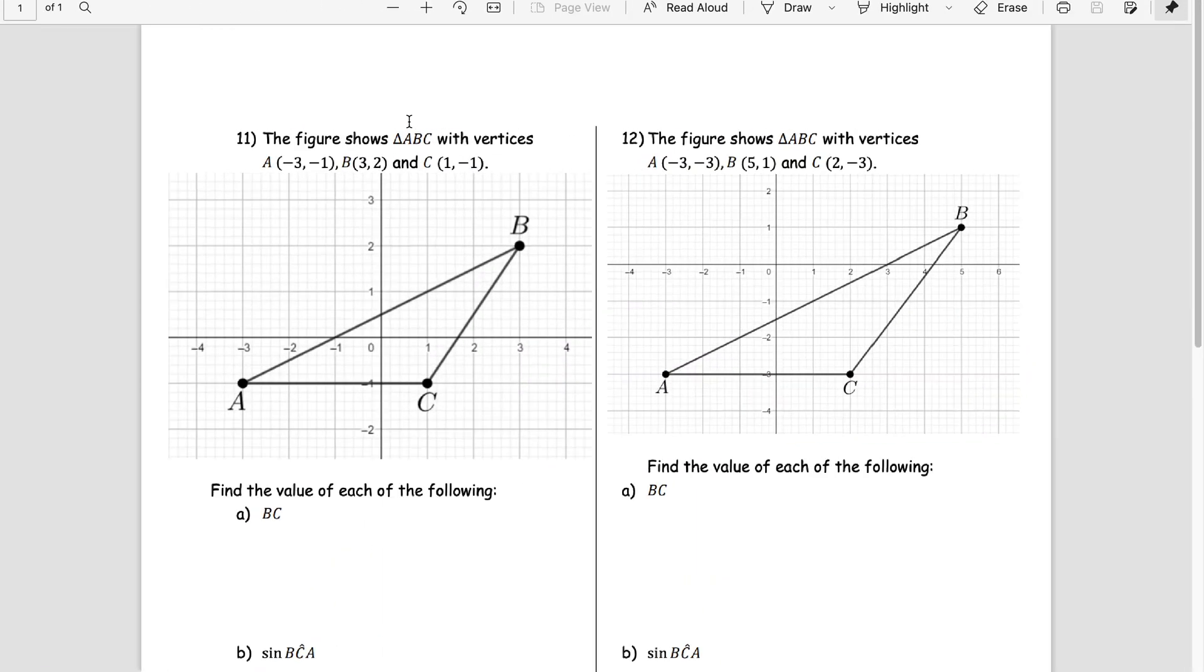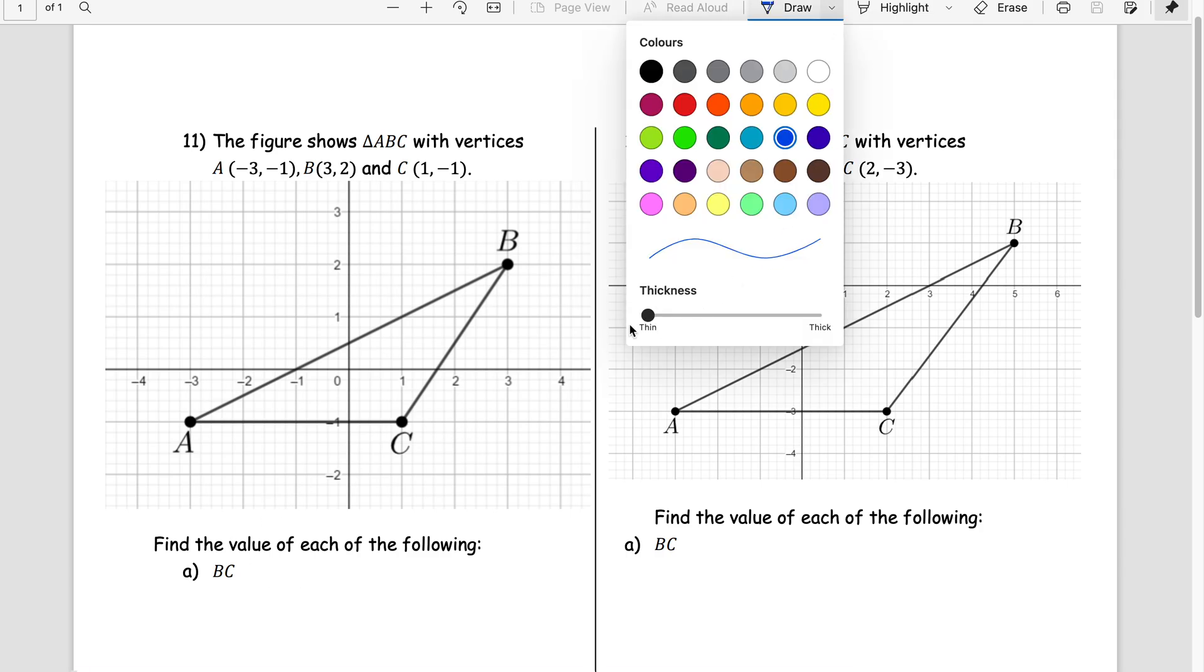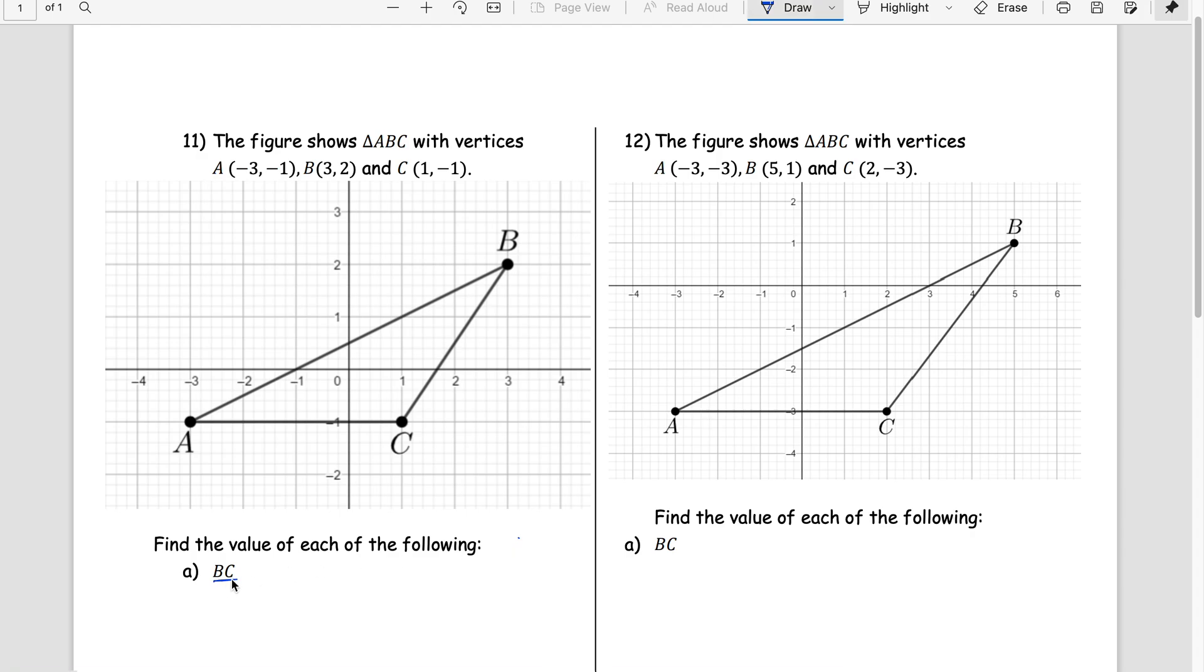Question number one: the figure shows triangle ABC with the vertices A, B, and C as given and shown in the diagram. The first demand of the question is to find the value of BC. So I'm going for the length of BC using the distance formula. I can directly count: the change in x is 2, change in y is 3, so 2 square plus 3 square, whole square root. 2 square plus 3 square is 13. For now I'm keeping it in exact form, not going into decimals, so that is square root 13.